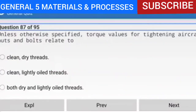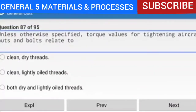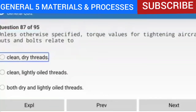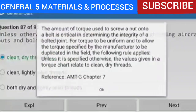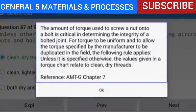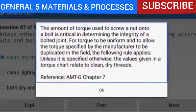Question 87 of 95: Unless otherwise specified, torque values for tightening aircraft nuts and bolts relate to clean, dry threads. The amount of torque used to screw a nut onto a bolt is critical in determining the integrity of a bolted joint. Unless specified otherwise, the values given in a torque chart relate to clean, dry threads. Reference: AMTG Chapter 7.